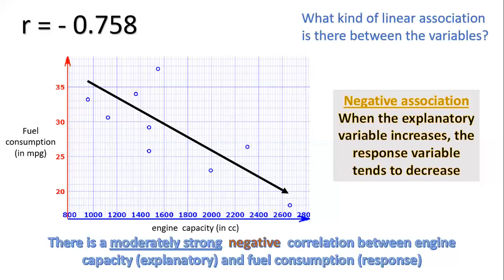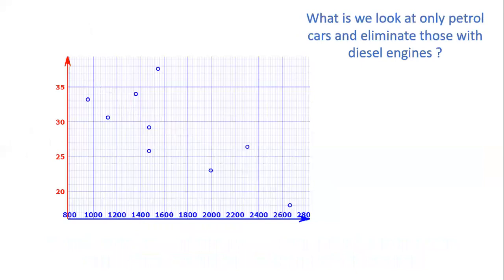But an interesting factor is here. We remember from our initial data set that there were a couple of cars in the data set that were diesel cars. What would happen if we look only at petrol cars and eliminate those brands of Peugeot, those makes that had diesel engines?